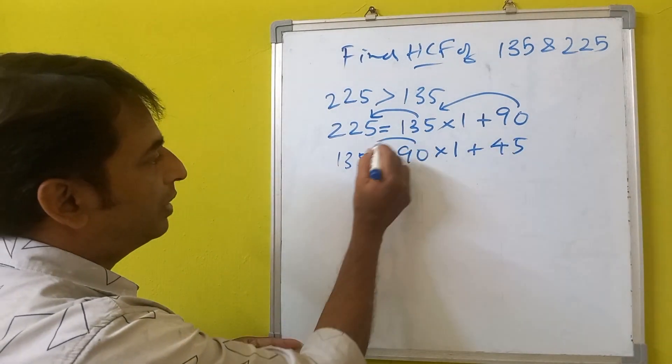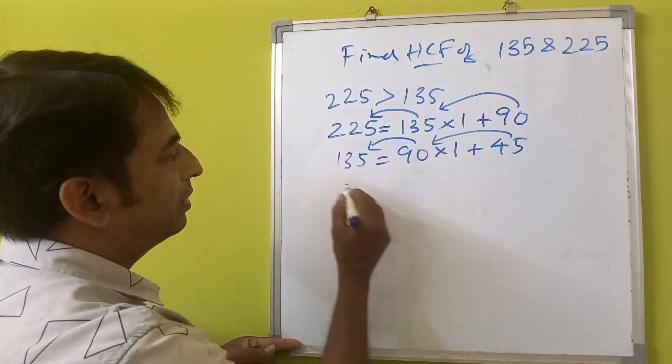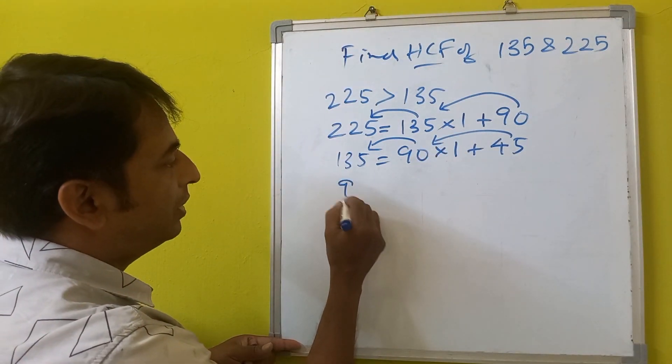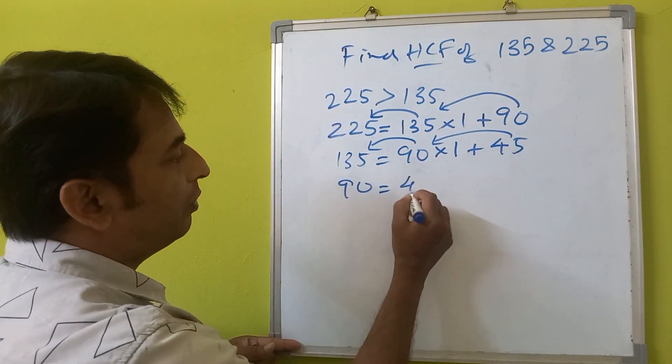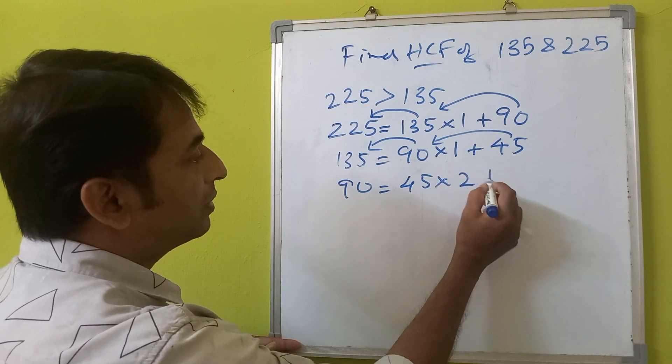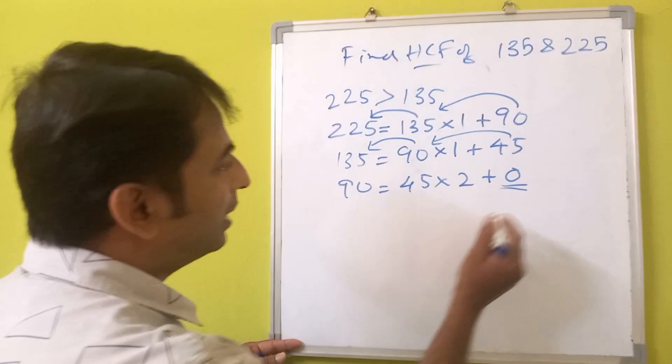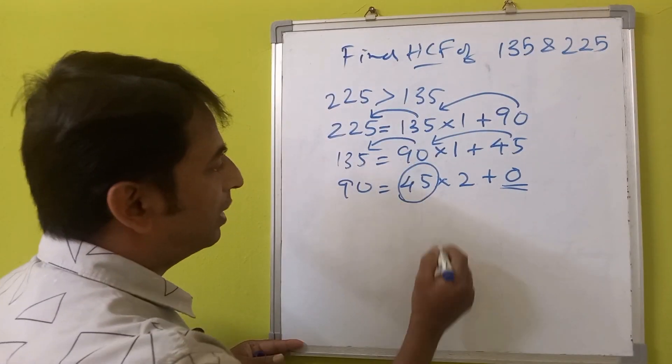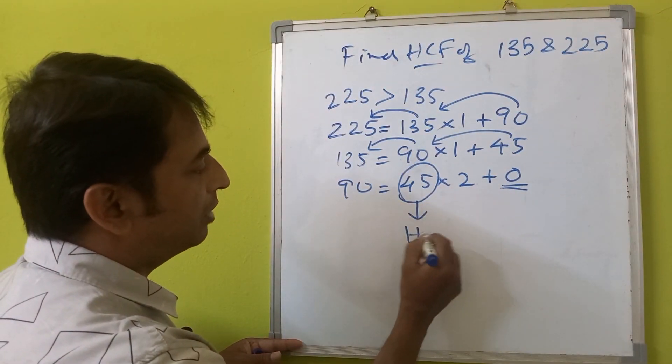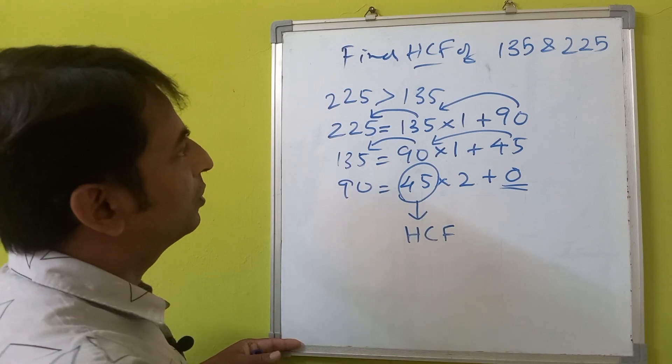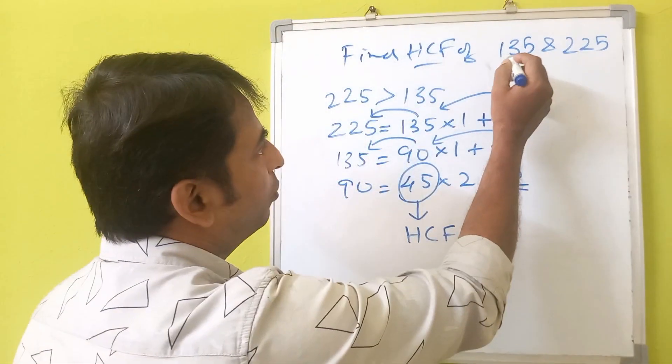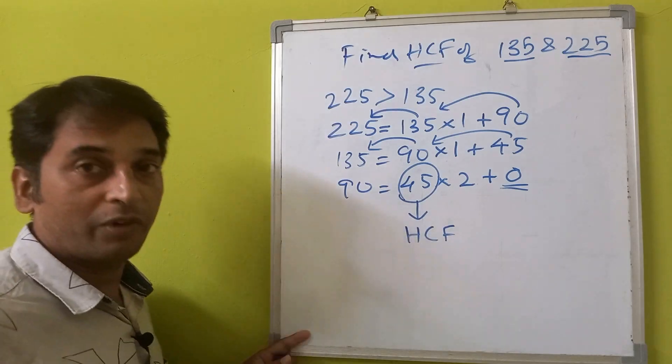Then again we will apply this and we will get 90 equals 45 times 2 plus 0. Here we get the remainder 0. At this point, whatever is the divisor, that will be the HCF of these numbers. So the HCF of 135 and 225 is 45.